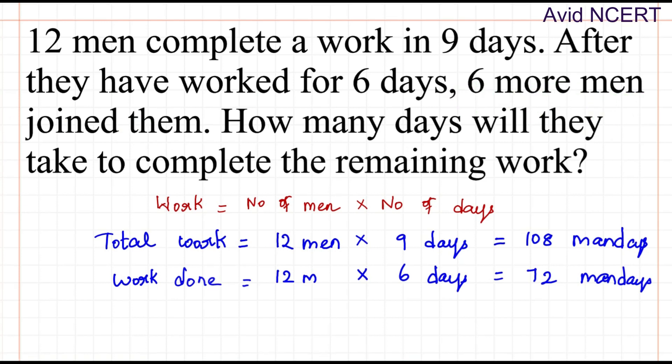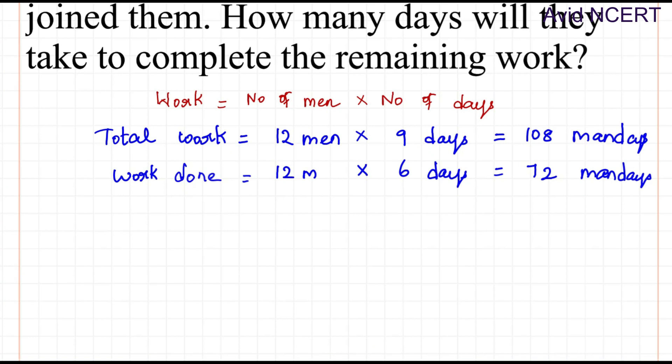6 more men join them. So after finishing 72 man-days, the remaining work is 36 man-days remaining. At this stage, 6 more men join them.